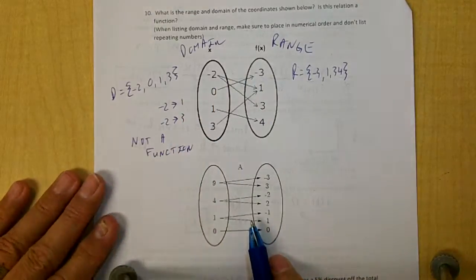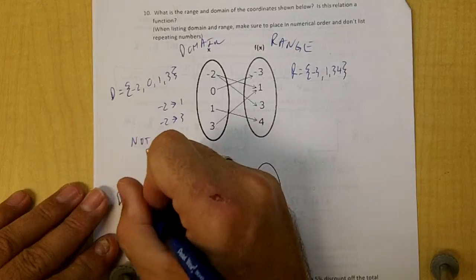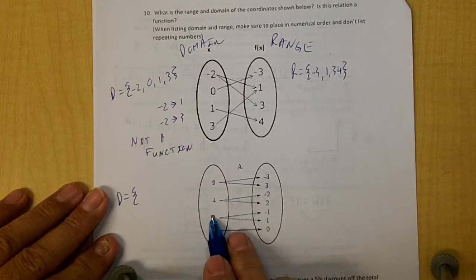Okay, let's go to part A. We're going to write our domain equals and put them in order: 0, 1, 4, 9.